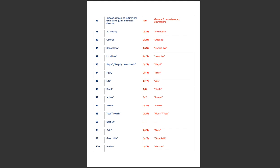Section 38 of the Indian Penal Code deals with persons concerned in a criminal act who may be guilty of different offences. Whereas section 3, clause 9 of the BNS deals with general explanations and expressions. Section 39 of the Indian Penal Code defines the term 'voluntarily', whereas section 2, clause 33 of the BNS 2023 defines the term 'voluntarily'. Section 40 of the Indian Penal Code defines the term 'offence', whereas section 2, clause 24 of the BNS 2023 defines the term 'offence'.